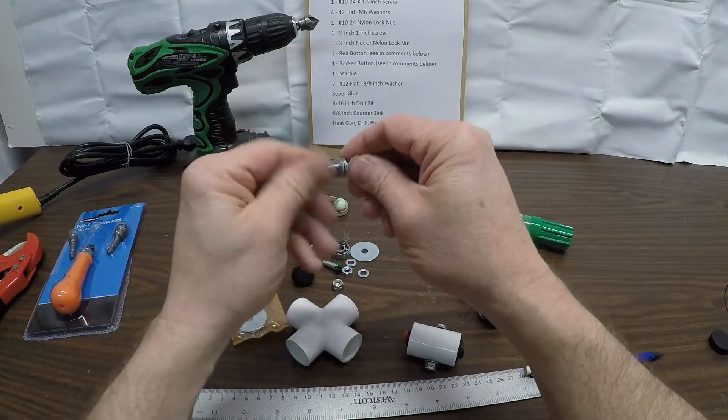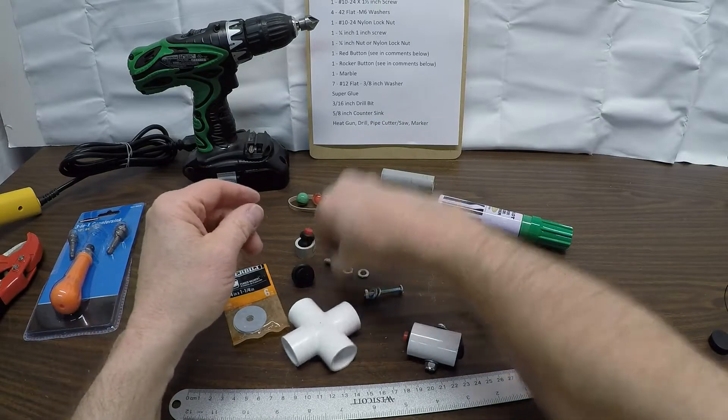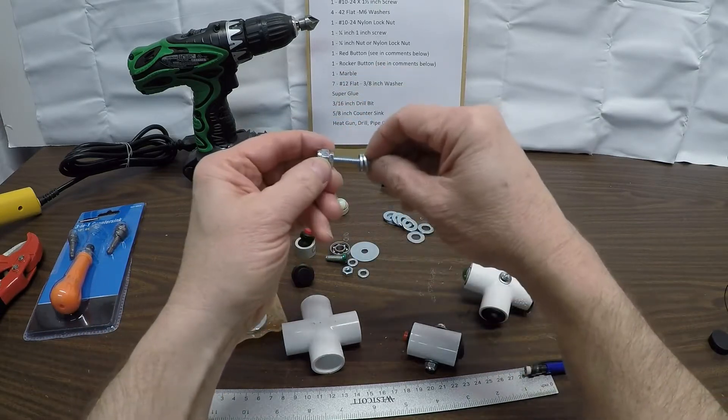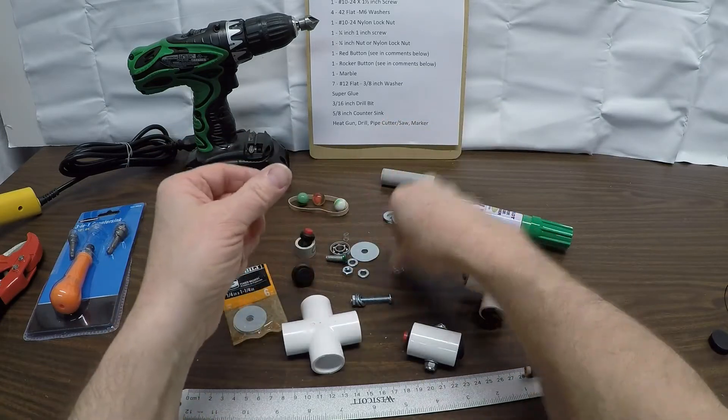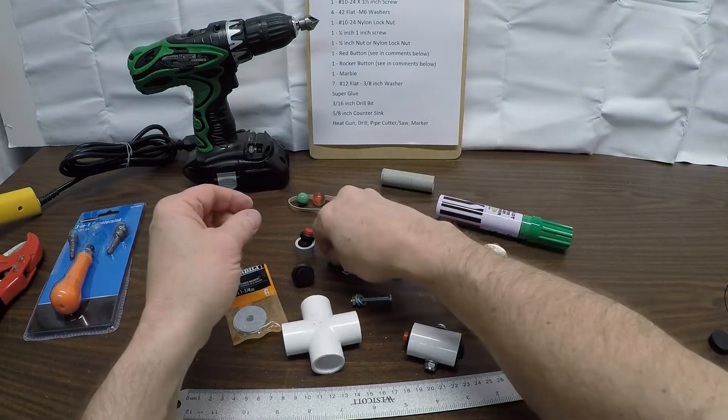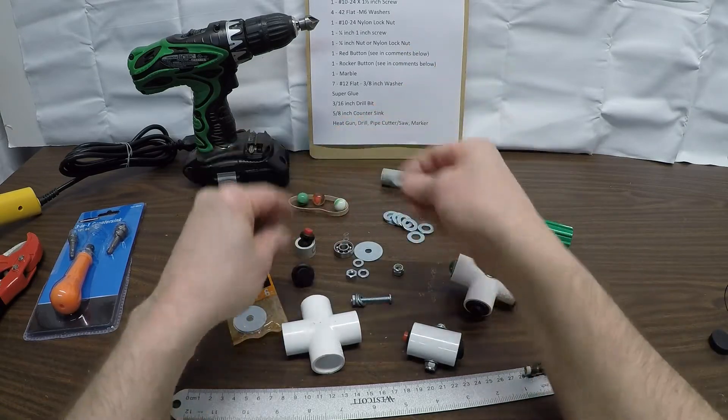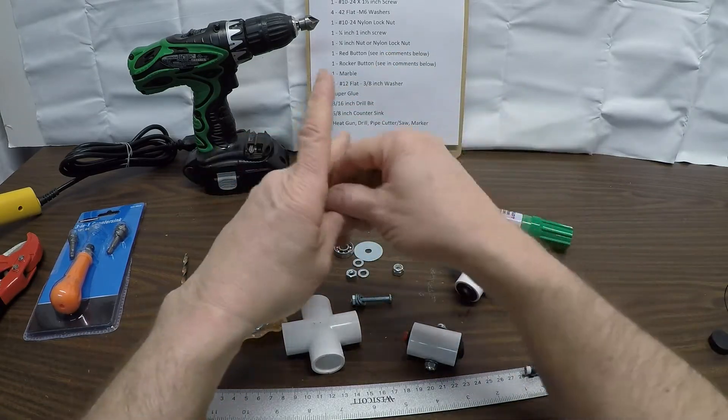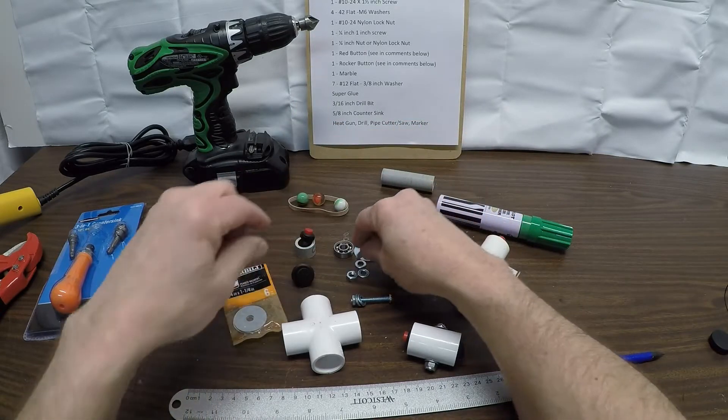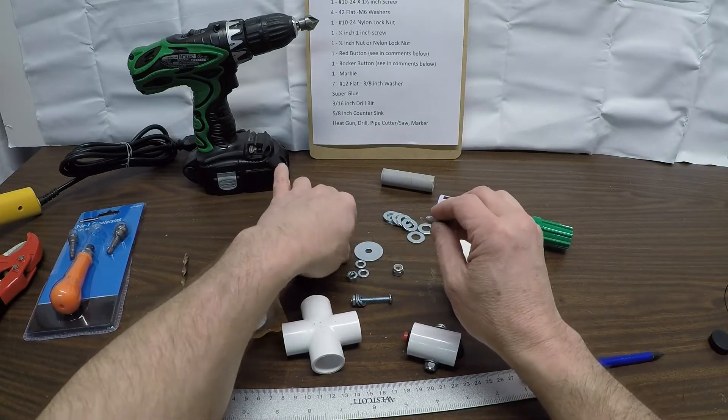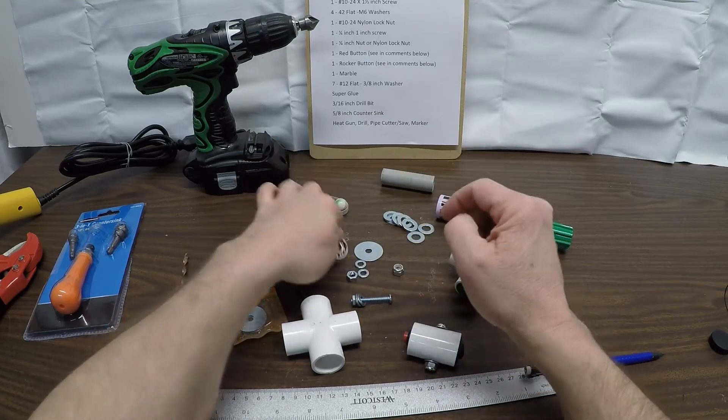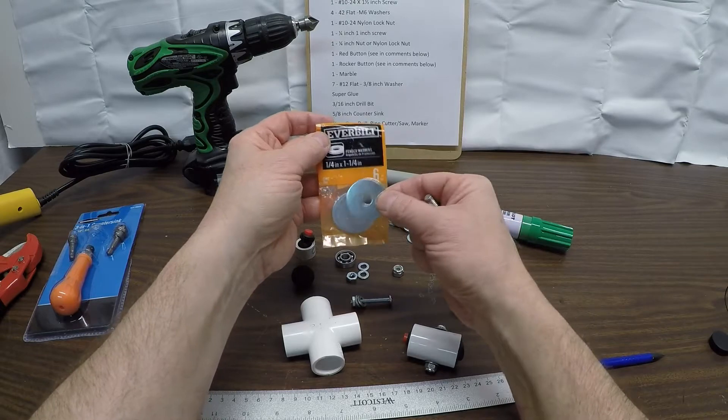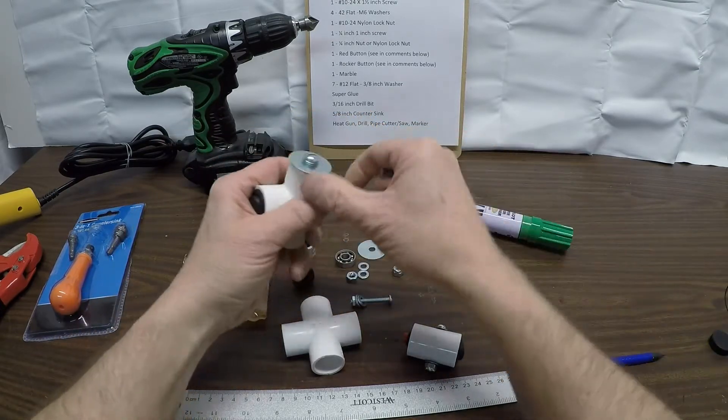You can use a nut or a nylon lock nut. You're going to need a quarter inch screw, one inch, and this is going to be for this part of the build. With that you're going to need two more of the washers, bearing race by one and a one and one quarter inch washer.